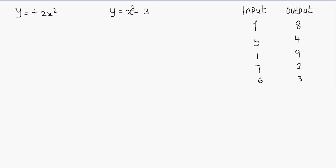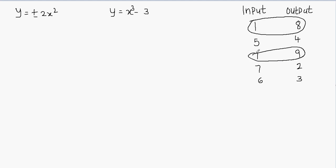If a single input does not have exactly one output, then that is not a function. Here you can see that if I plug in x equals 1, my output is 8. Then when I plug in x equals 5, my output is 4. But when I plug in x equals 1 again, my output is 9.